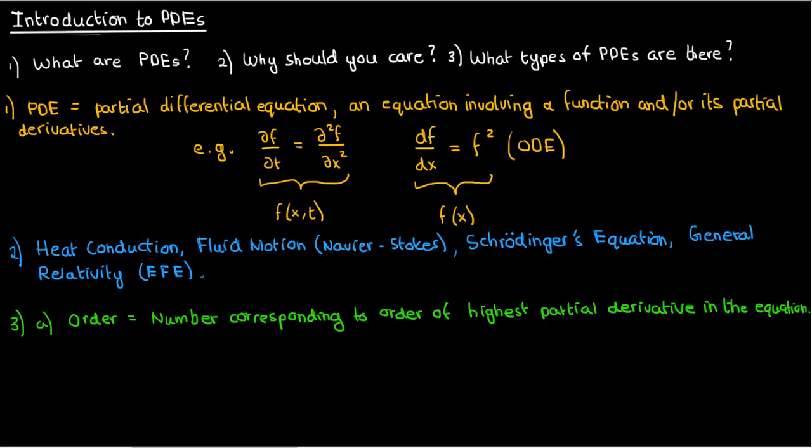What do I mean by this? Well, for instance, if I had a PDE given by d²f/dx² equals df/dt, then in this PDE, the highest partial derivative would be the term in which the function f is being differentiated the largest number of times. In this case, the highest partial derivative term is the d²f/dx² term, so the order of this PDE is 2.